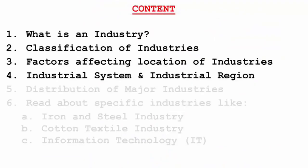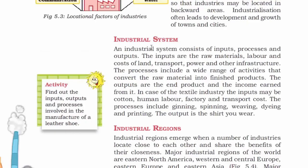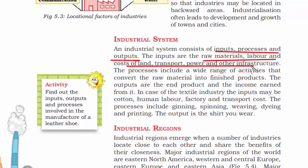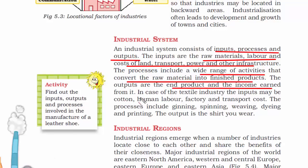The next topic is industrial system and industrial region. We've read in the previous chapter on agriculture that a system comprises of inputs, processes, and outputs — and it is the same in industrial system. Here the inputs are basically raw materials, labor, cost of land, transport, power, and other infrastructure. The process refers to the wide range of activity that converts the raw material into finished product. And output refers to the income or profit earned over the final product.